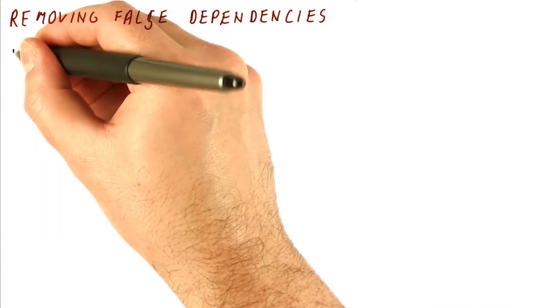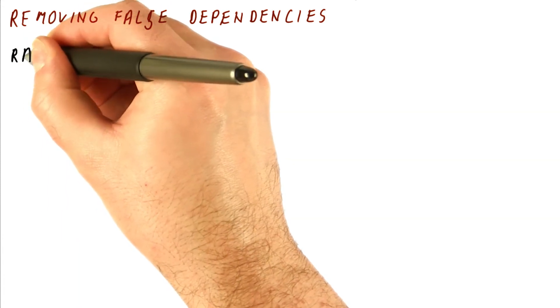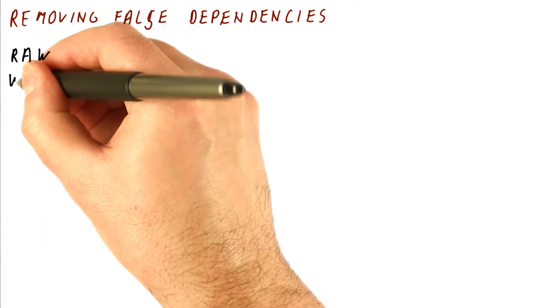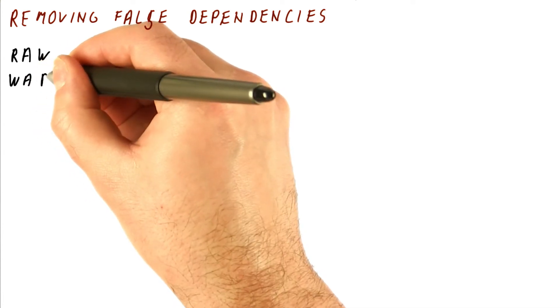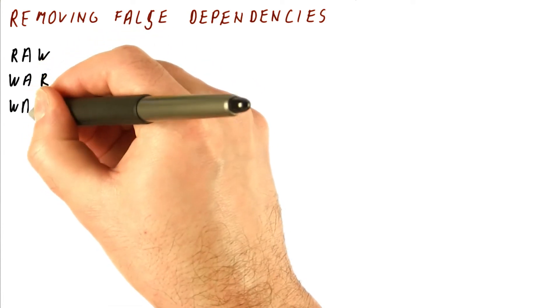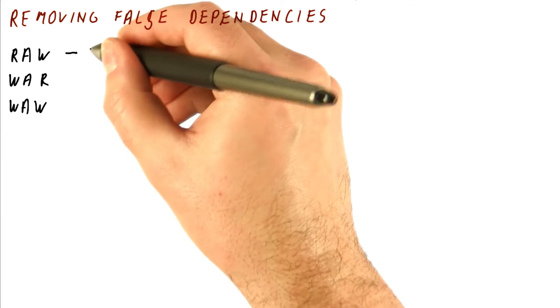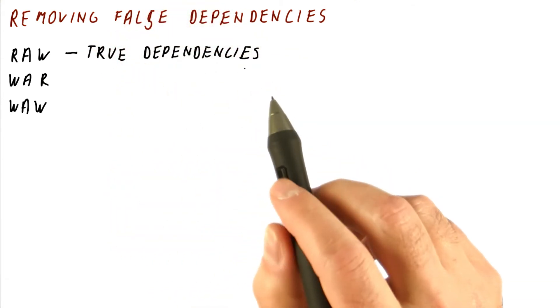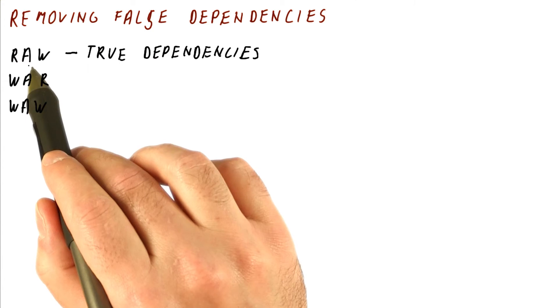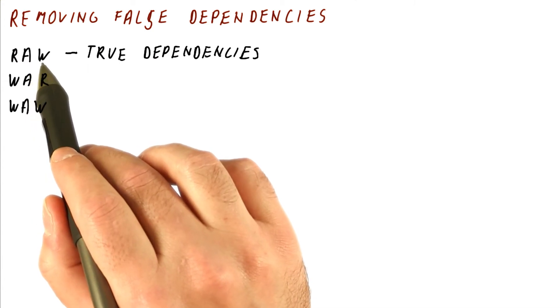What are false dependencies? Well, we have read after write, we have write after read, and we can also have a write after write. These are called true dependencies because you actually have to obey them. That's how the program computes.